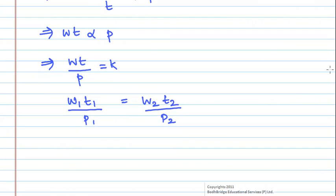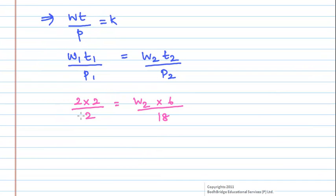Substituting these values here we will get 2 into 2 into 2 divided by 2 which is equal to w2 into 6 divided by 18. On simplifying this we will get 2 is equal to w2 divided by 3.